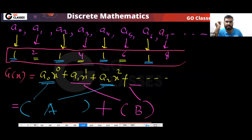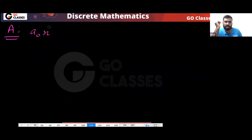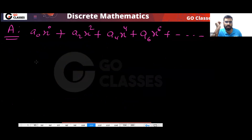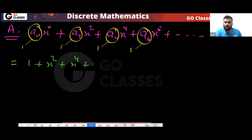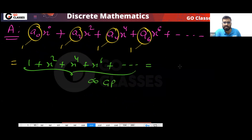So what is A? A corresponds to a_0, a_2, a_4 — all are one. So A = a_0·x^0 + a_2·x^2 + a_4·x^4 + a_6·x^6 + ... All coefficients are one. So A = 1 + x² + x⁴ + x⁶ + ... This is an infinite GP, and the answer will be 1/(1 - x²). This will be your A.